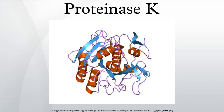The predominant site of cleavage is the peptide bond adjacent to the carboxyl group of aliphatic and aromatic amino acids with blocked alpha-amino groups. It is commonly used for its broad specificity.